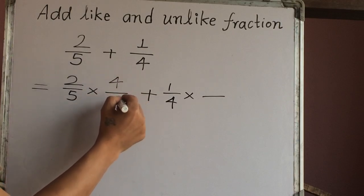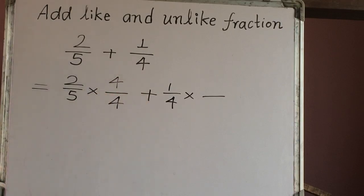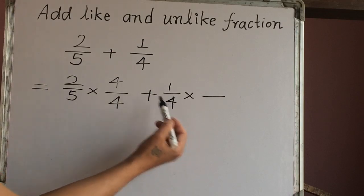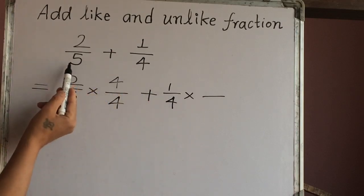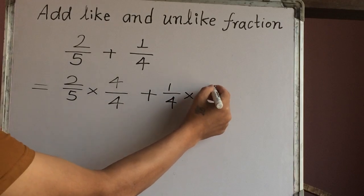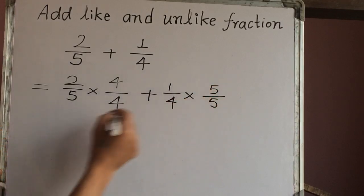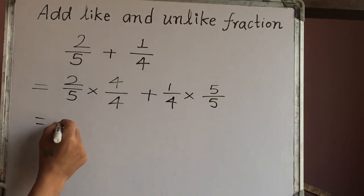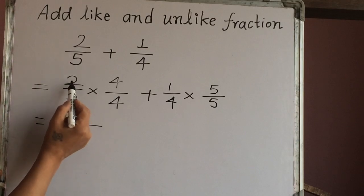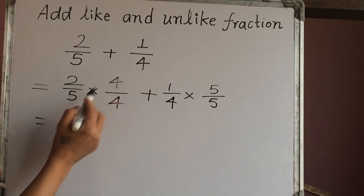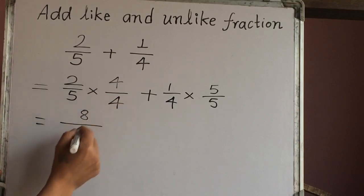So let's multiply 4 as a numerator also, denominator also. For the second fraction we have to multiply with the first denominator which is 5. Now we have to multiply this fraction into fraction. 2 times 4 is 8. 5 times 4 is 20.